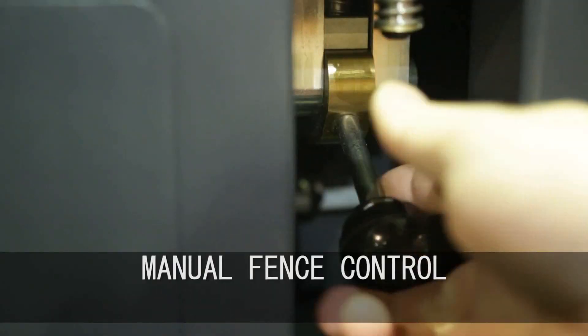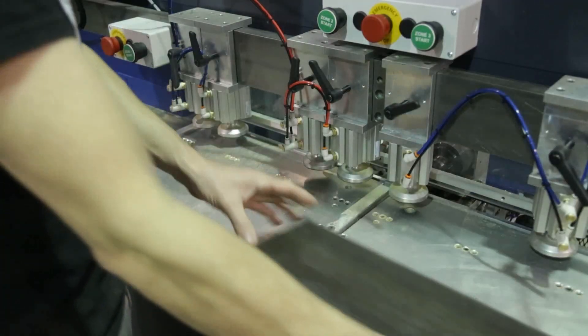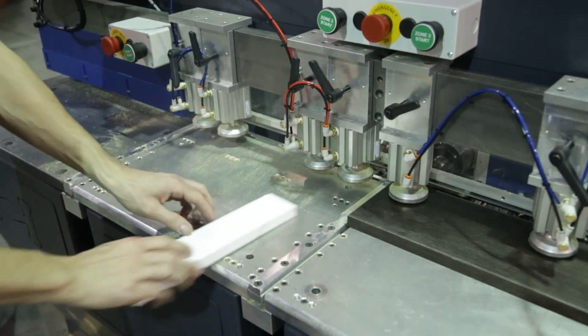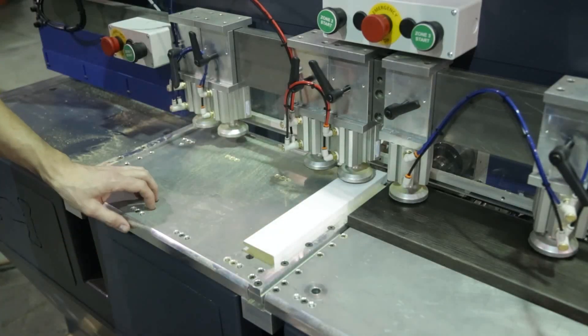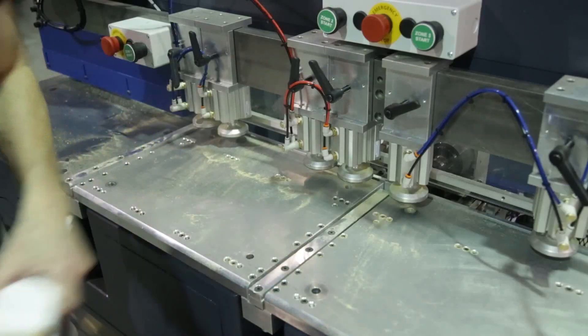The HP5D has manually operated reference fences for all zones. This makes quickly moving from one material length or operation to another easy.